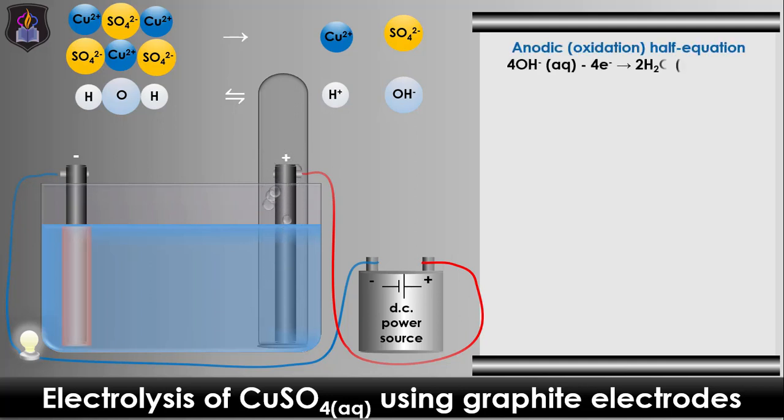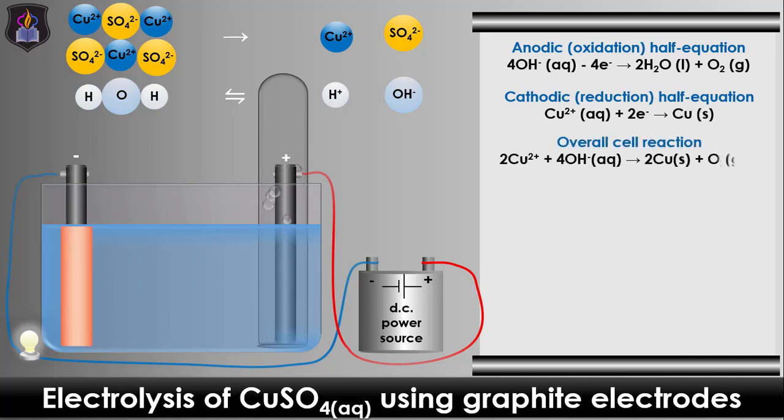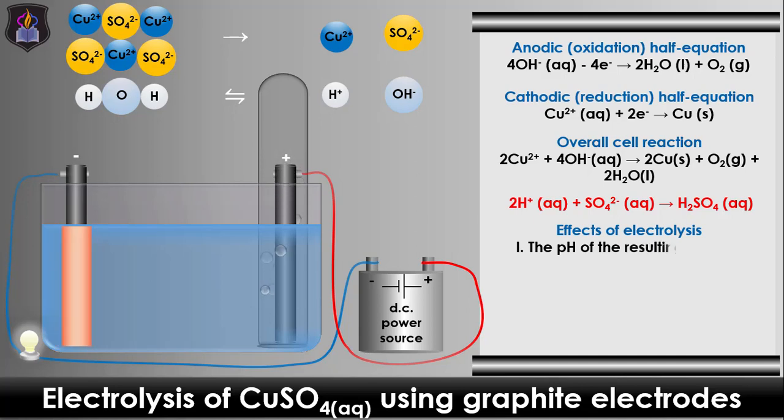after the hydroxide ions are discharged at the anode as oxygen gas, and copper(II) ions are discharged at the cathode as metallic copper deposits, as shown in the anodic and cathodic half equations, the hydrogen ions and sulfate ions remaining in the solution combine to form tetraoxosulfate(VI) acid, that's H₂SO₄, thereby increasing the acidity of the resulting solution and decreasing its pH.